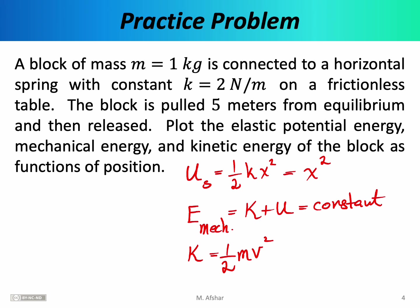Instead, we note that mechanical energy E equals K plus U. Solving for K, we find that kinetic energy equals mechanical energy minus U. Since U equals x squared, kinetic energy equals the constant mechanical energy minus x squared. This graph will be parabolic — specifically an inverted parabola because of the minus sign — and the constant shifts the graph up or down.